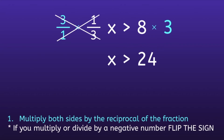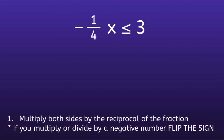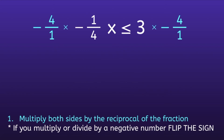So the final inequality will be x is greater than 24. Example number 2: negative 1 fourth x is less than or equal to 3. Step 1: multiply both sides by the reciprocal of the fraction. So what is the reciprocal of negative 1 fourth? If you were thinking negative 4 over 1, you are correct. So notice I keep that negative sign and just switch the numerator and denominator. So I'm going to multiply both sides by negative 4 over 1.